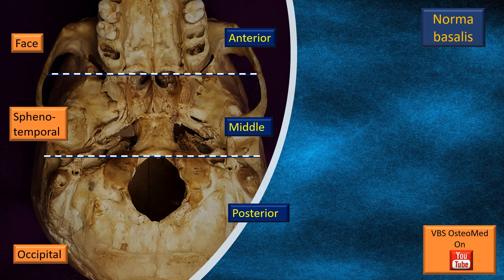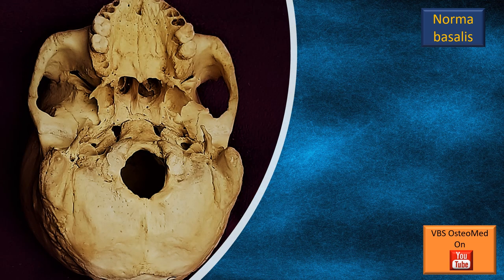In Part 1, we covered the face. In Part 2, we covered the sphenotemporal region. Now let's start discussing the posterior or the occipital part — that's the region for today's discussion, shown by the dotted rectangle.